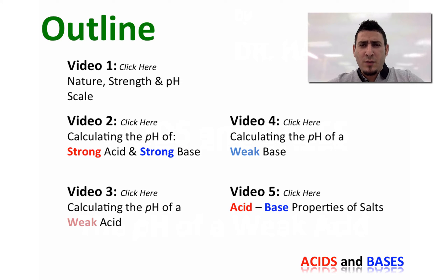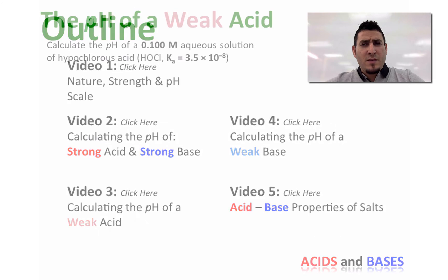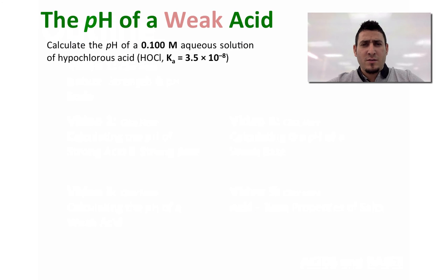But before I start my video, let me remind you of the outline of this chapter where I will be talking about five different topics, so please refer to the corresponding video for the topic of interest. In today's example, we will consider the following: calculate the pH of a 0.100 molar aqueous solution of hypochlorous acid, HOCl. The Ka is given as 3.5 × 10^-8.